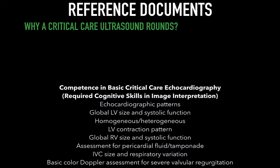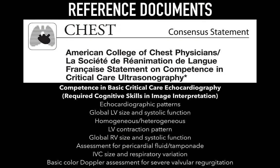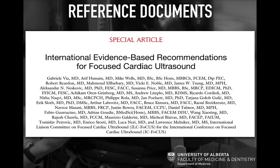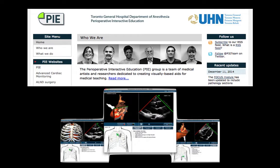I've put in some references here that are highly cited. This first one is from ACCP, or the American College of Chest Physicians. The key areas to focus on include echocardiographic patterns, global LV size, systolic function, differentiating homogenous versus heterogenous function, and contraction patterns. The document from Gabrielle Vie et al. provides international evidence-based recommendations. The Perioperative Interactive Education Group in Toronto also has very useful iPad and iPhone apps that can help you understand views and anatomy, and they are simply excellent.